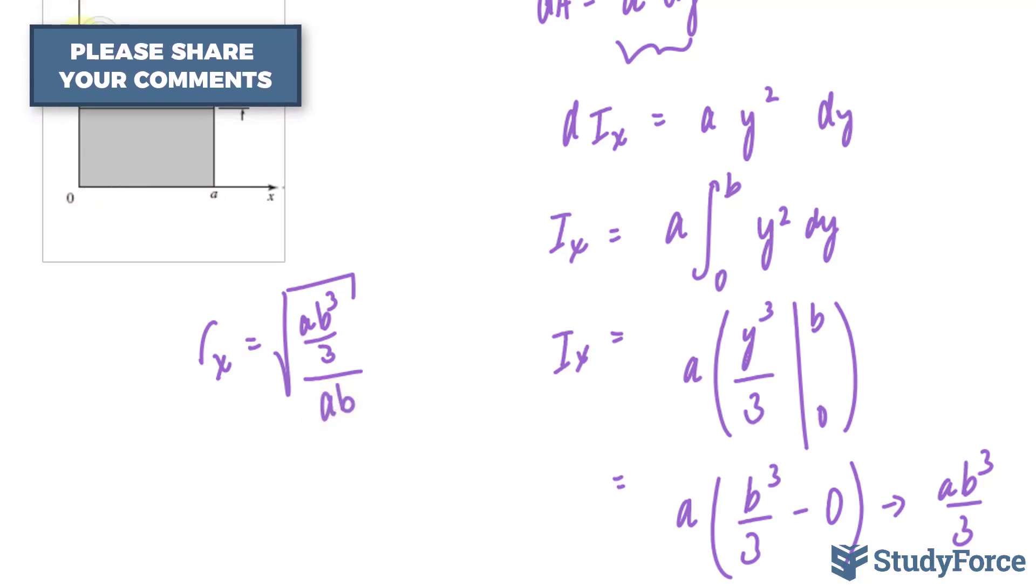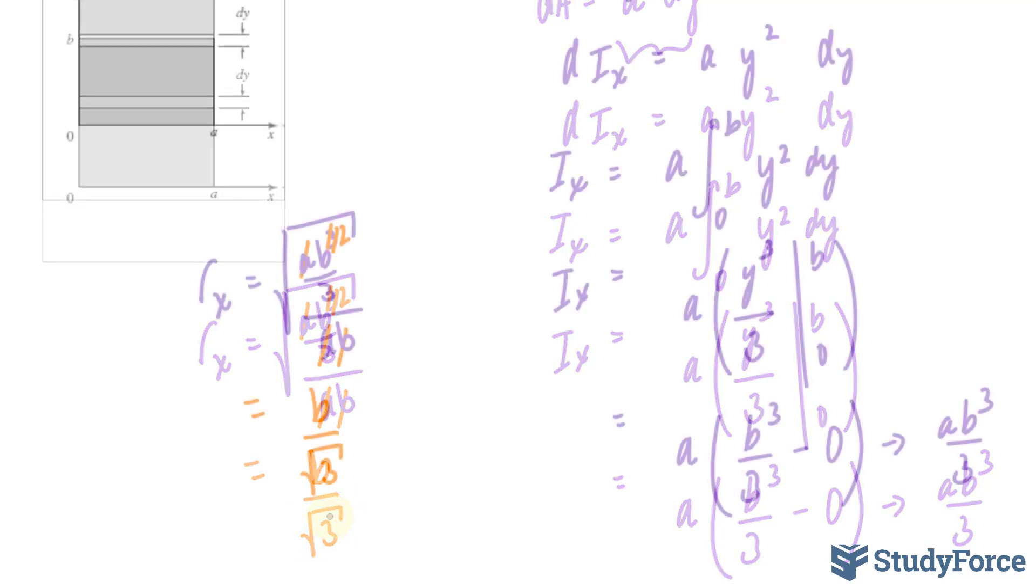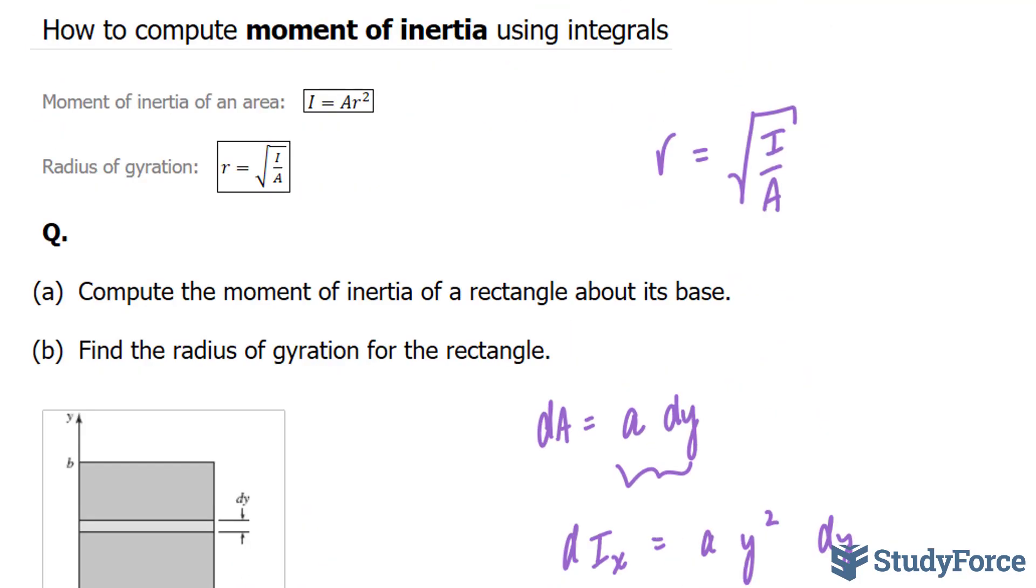What will happen here is the a and the b will cancel out leaving us with b squared here. And the square root of b squared over 3 is b over the square root of 3. And there you have it. That is how to compute the moment of inertia using integrals.